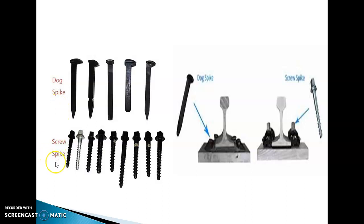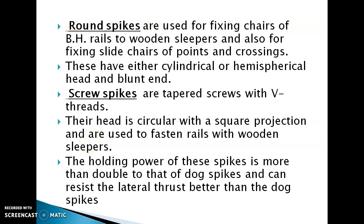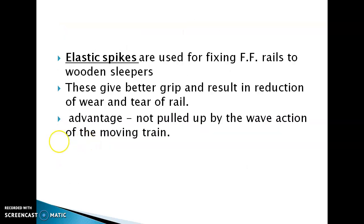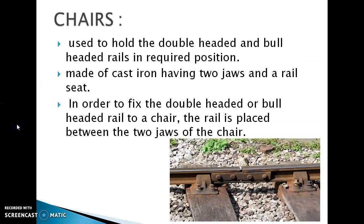Screw spikes. Both dock spikes and screw spikes are used only for flat footed rails. Elastic spikes and round spikes are used for bull-headed type of rails.